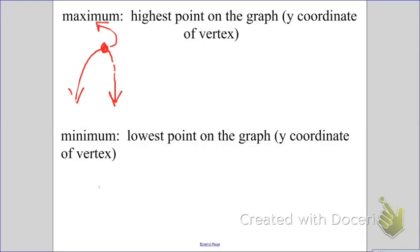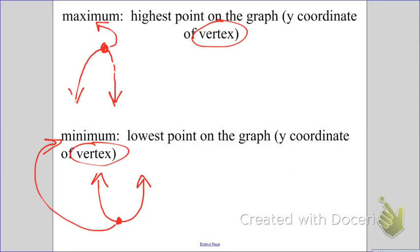If you have a parabola that is pointing up, then the very lowest point is the minimum. But both maximum and minimum are other words for vertex. It's important to understand they are still just vertex.